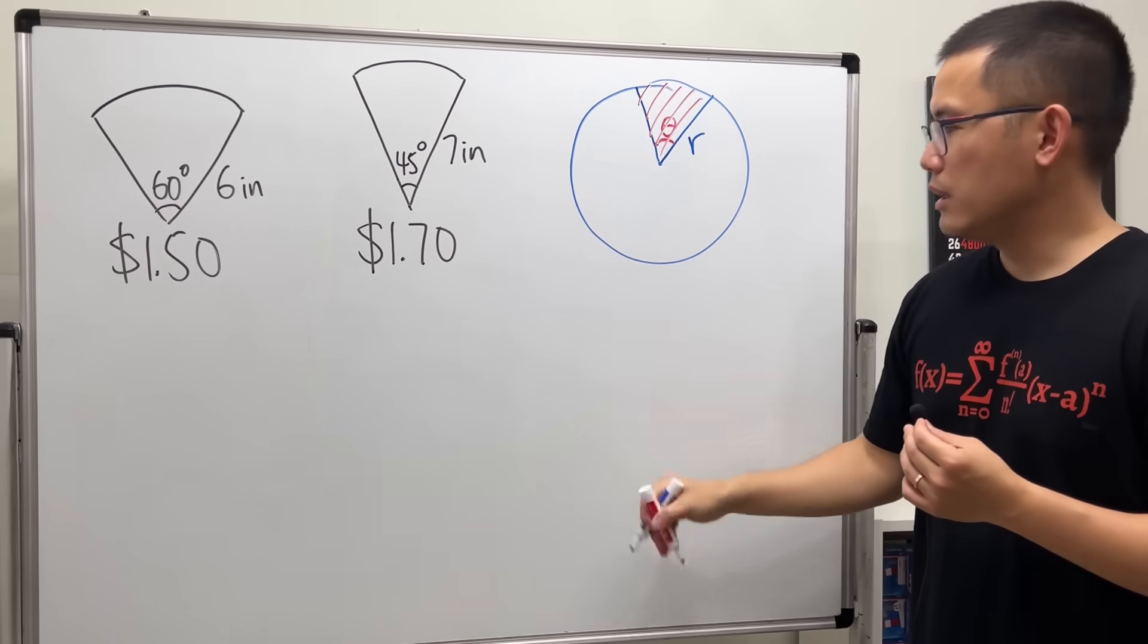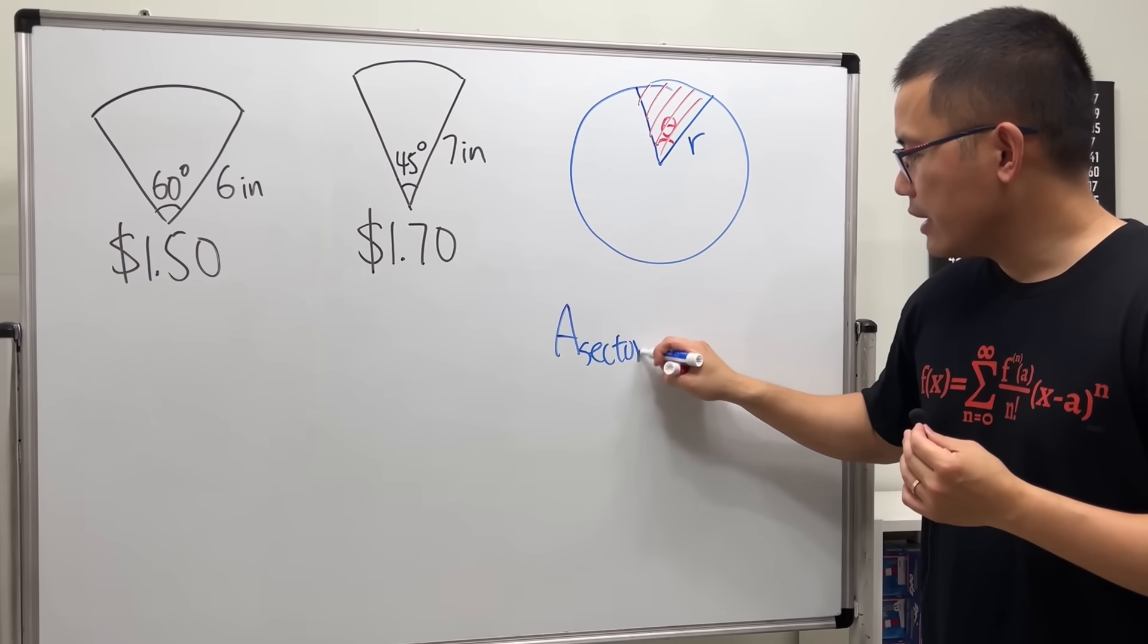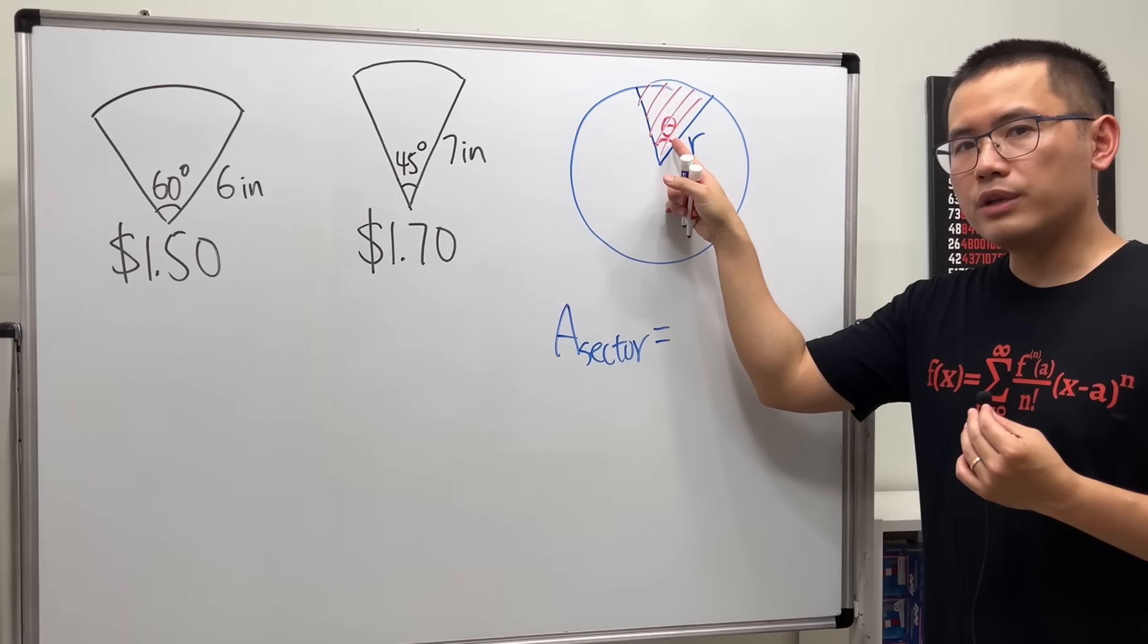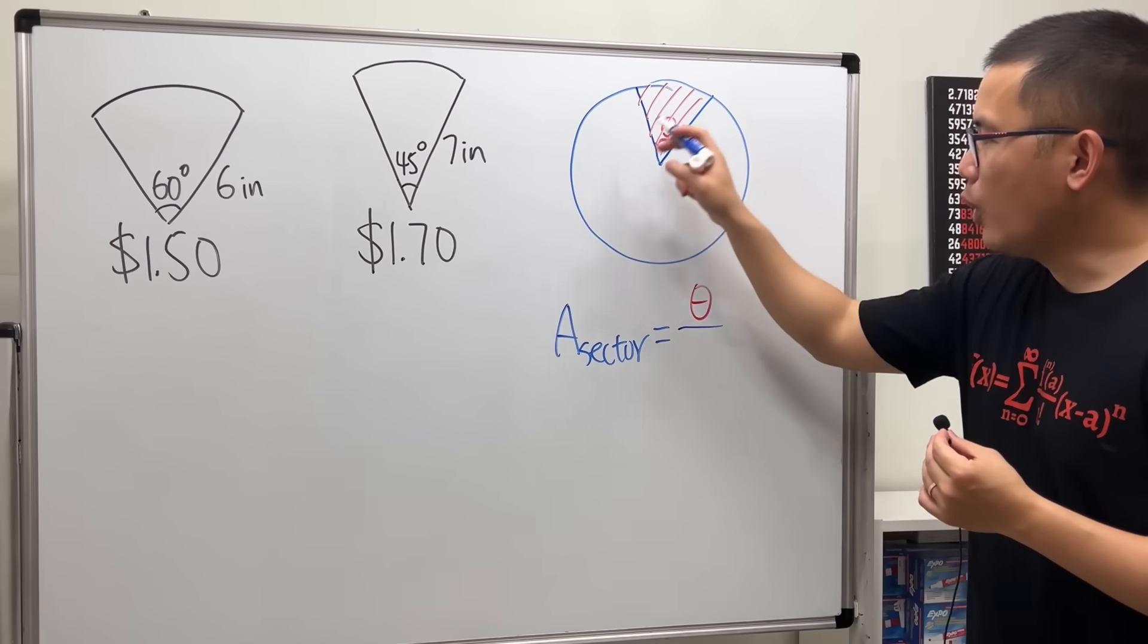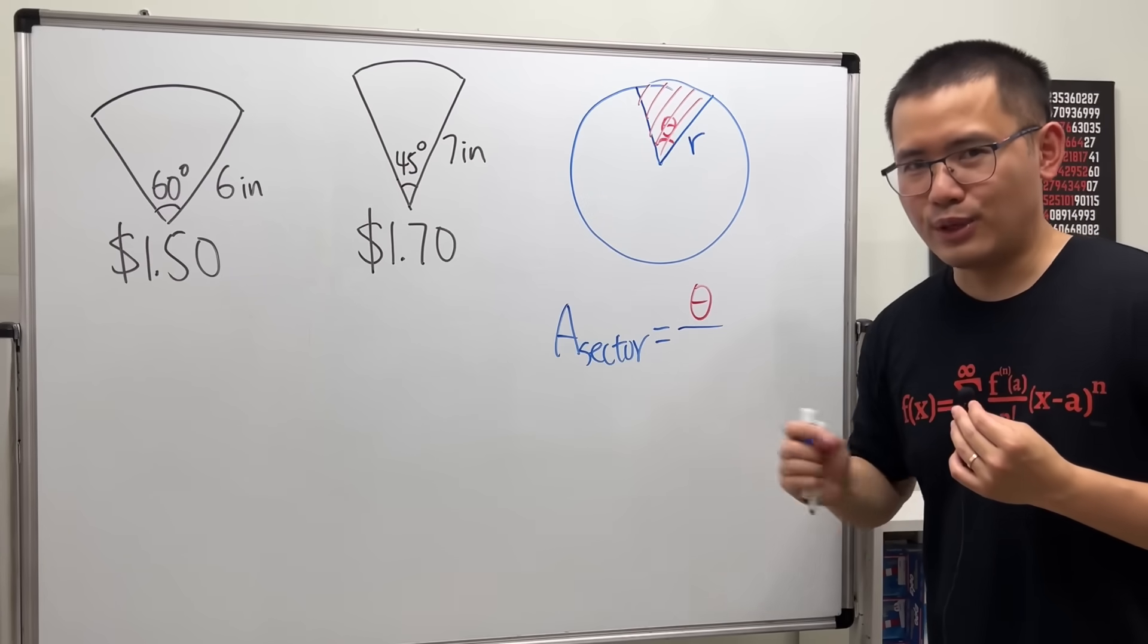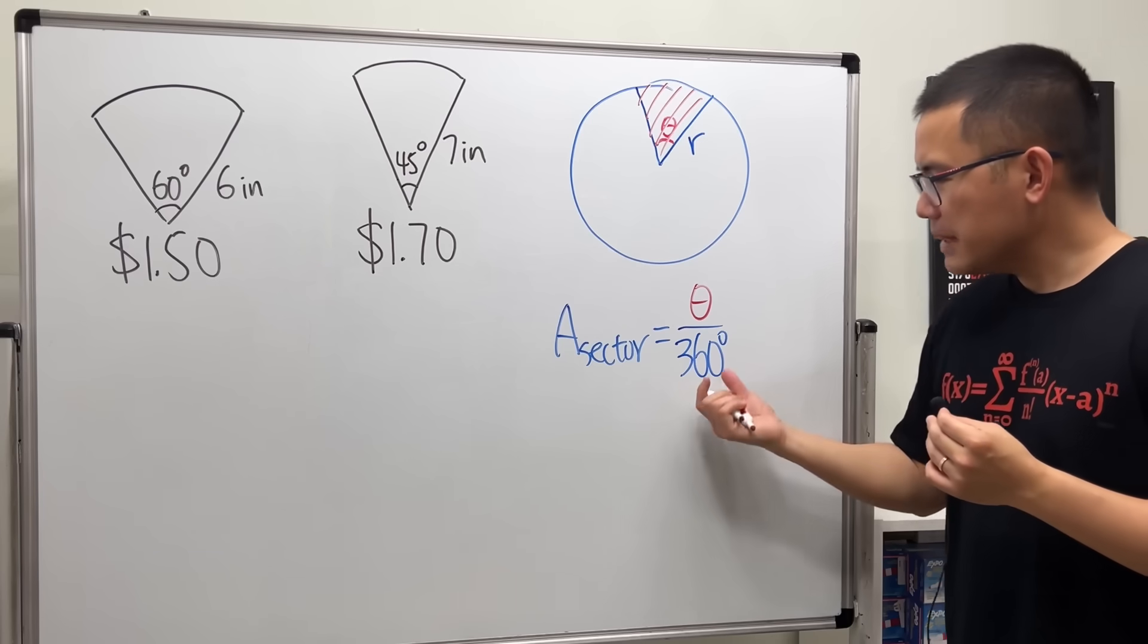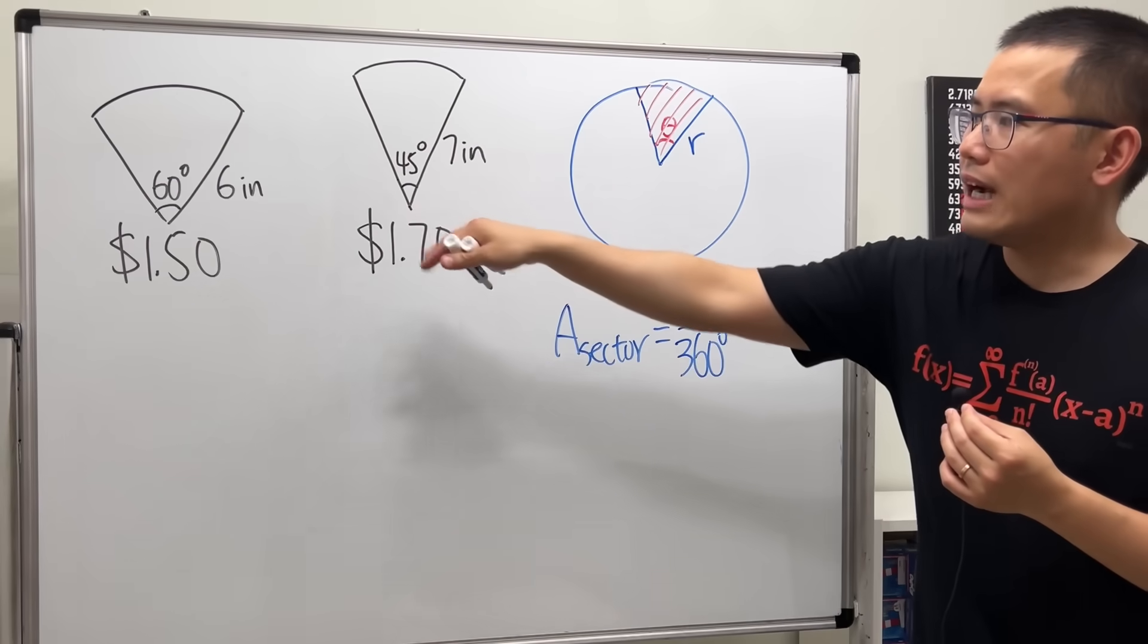The area of this sector is just a portion of the whole circle. Area of a sector equals, well it depends on how big the angle is, we will have to look at the angle theta divided by the whole circle which has 360 degrees. And sometimes you can use a different measurement called the radian, but in this case we all have degrees, so just degrees.